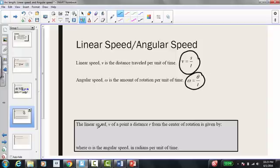So here it says, the linear speed, v, of a point a distance r from the center of rotation is given by. And I left this blank so we could derive it together. Basically what we're looking for is an equation that has linear speed in terms of r radius. So if you recall the previous equation that we had, theta equals s divided by r. Again, we can solve this for s and get s equals r times theta.